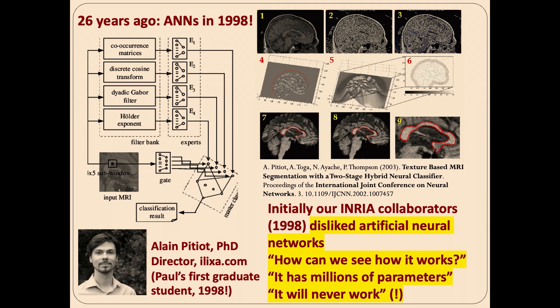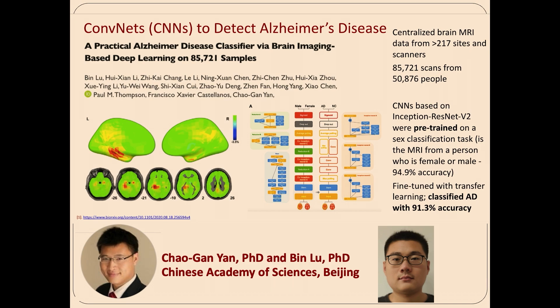25 years ago, my first student was doing neural networks to segment the corpus callosum, and his committee didn't like it. They said: we don't like neural networks — how can we see how it works? It has millions of parameters. This is in 2003. Fast forward to Chao Gan and his lab — his method with Vinloo can tell if a person has Alzheimer's disease. This is one of the largest brain imaging studies in the world, training a CNN to classify Alzheimer's disease.